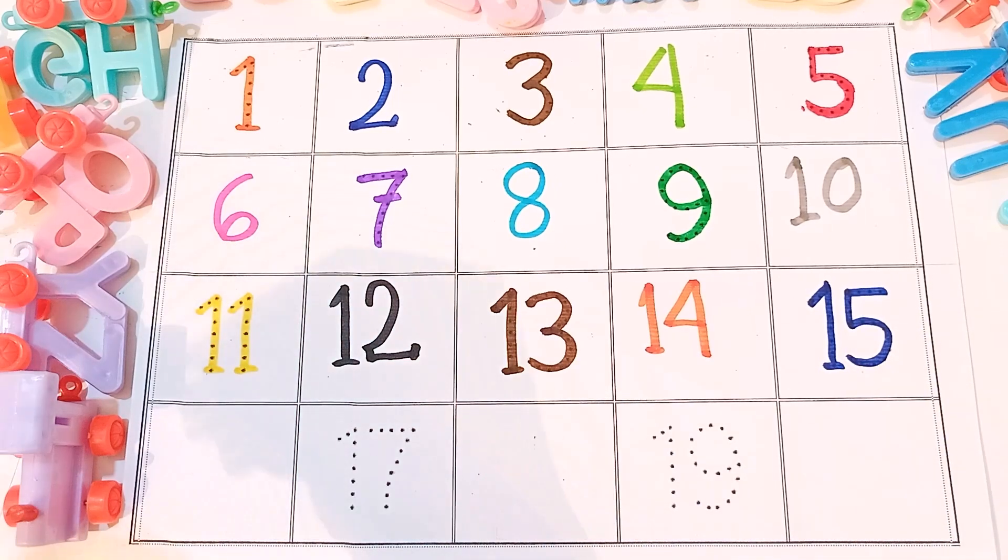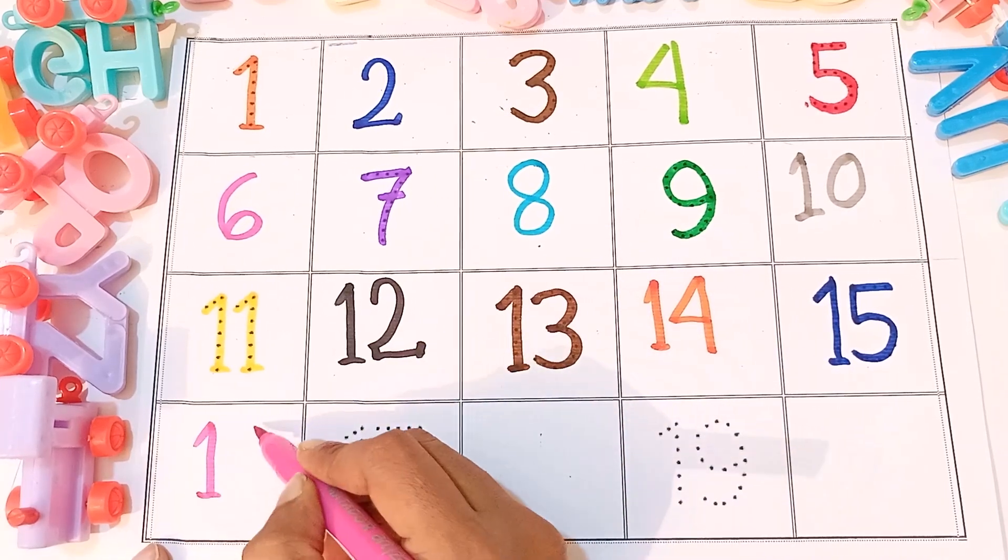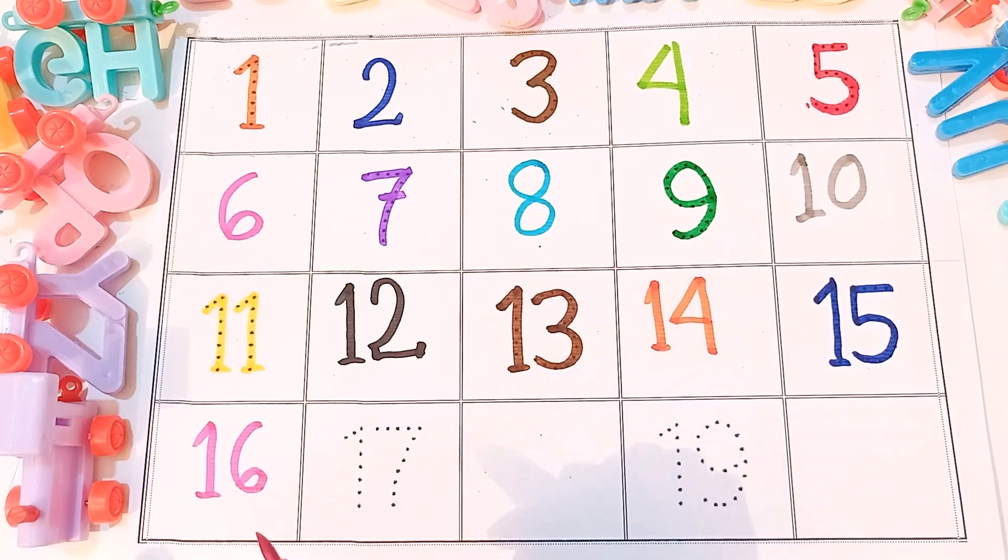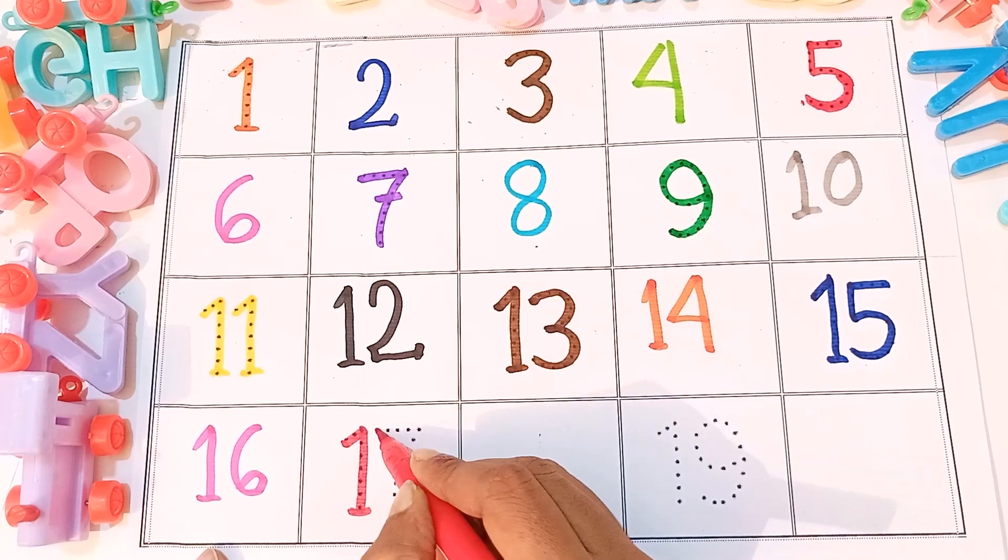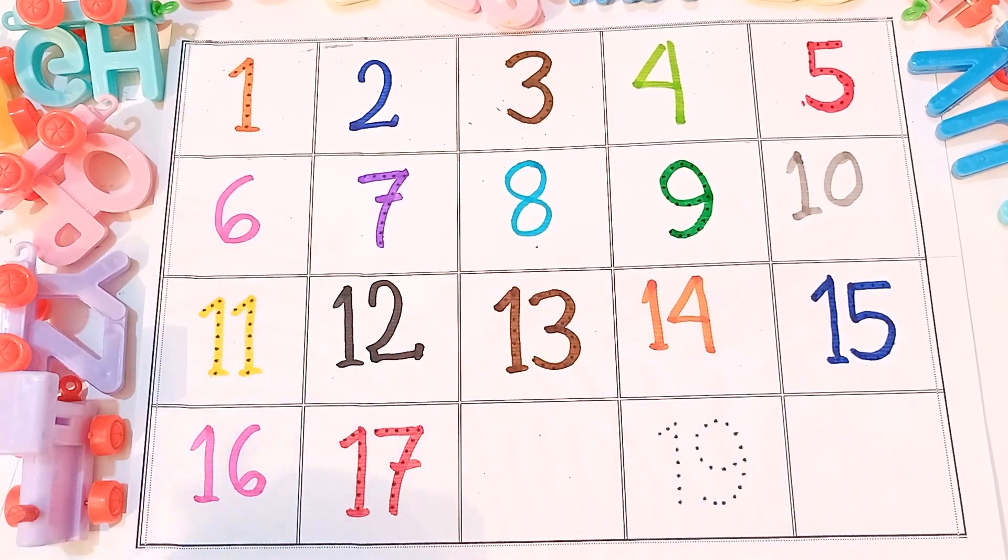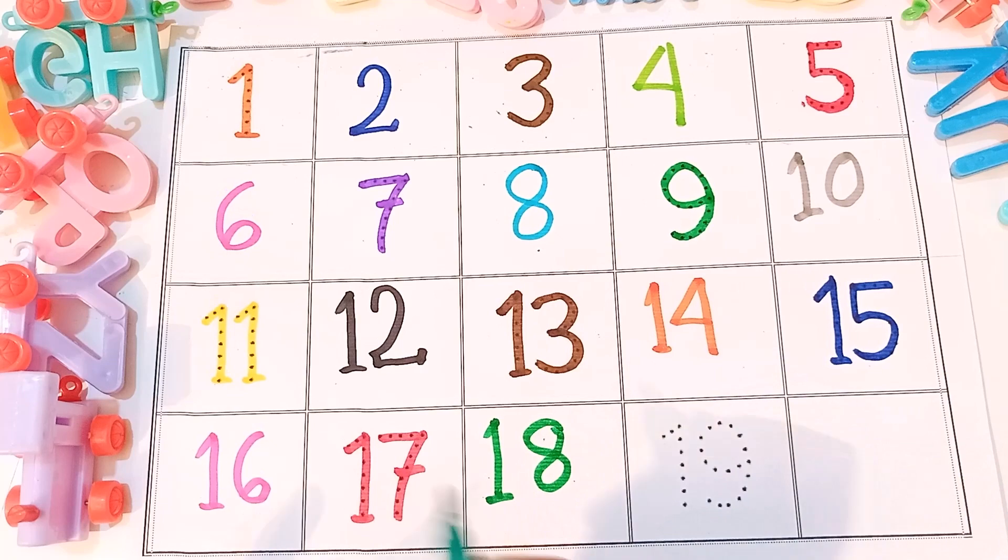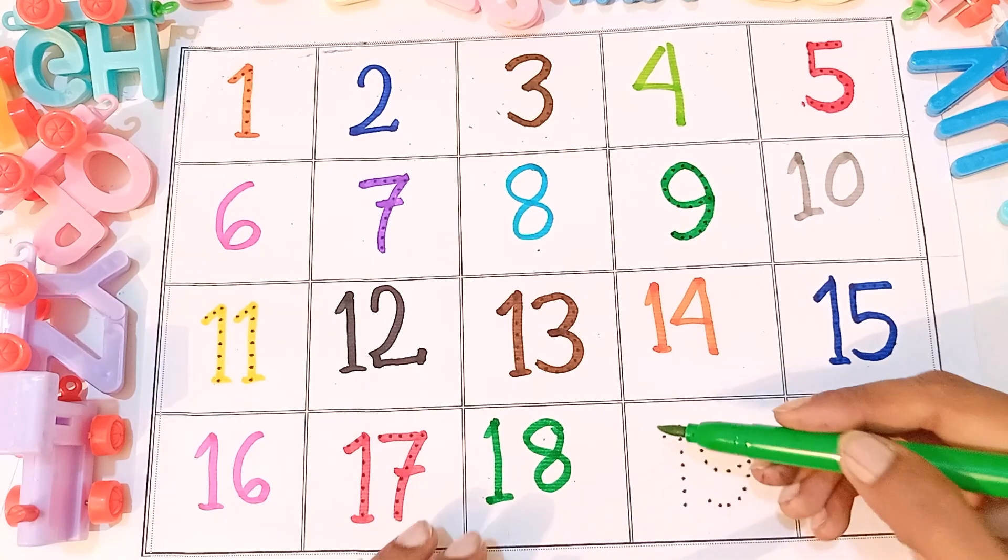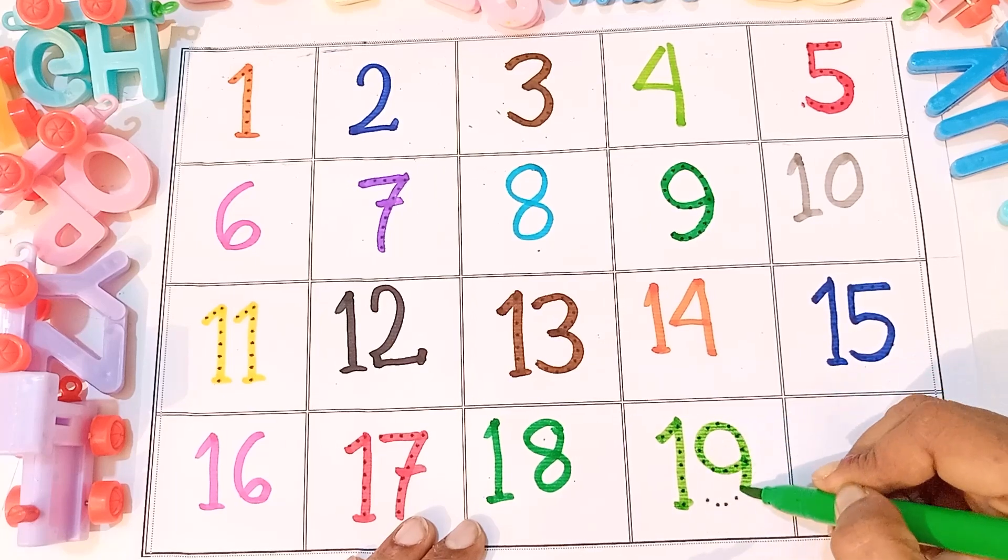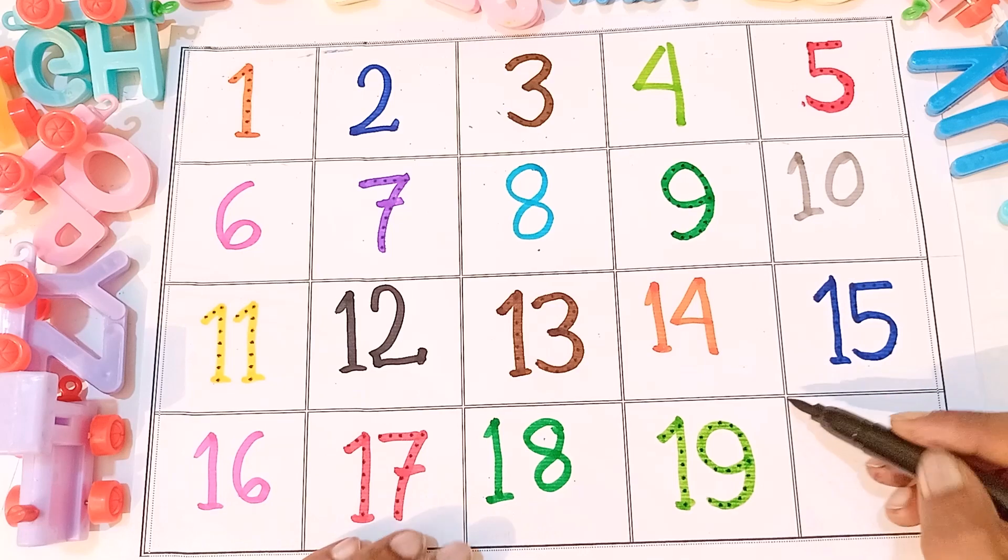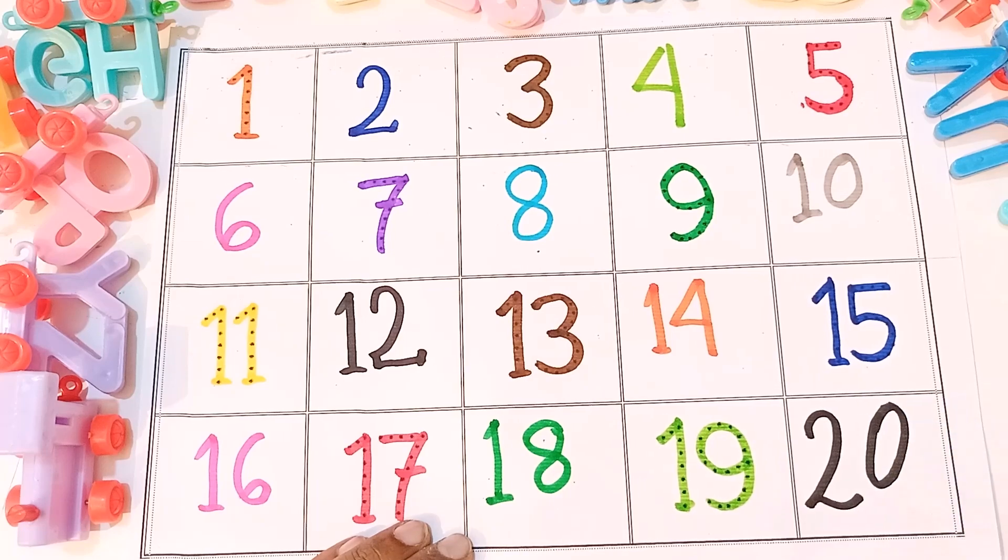Iske bad, pink color, one and six, sixteen. Red color, seventeen, one and seven. Green color, one and eight, eighteen. Light green color, one and nine, nineteen. Black color, two and zero, twenty.